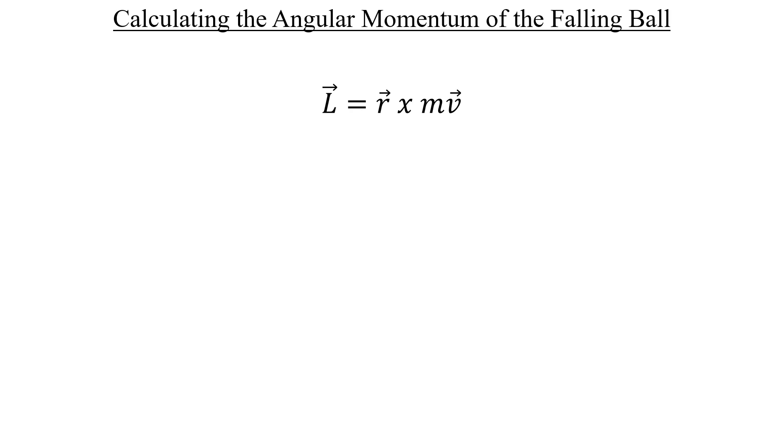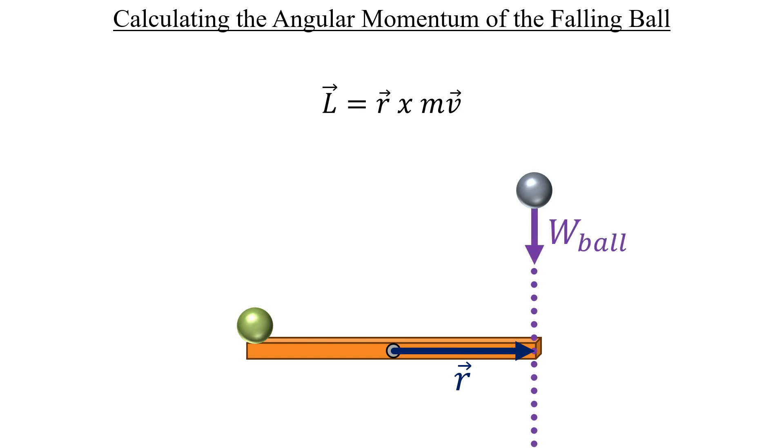Recall that the definition of momentum is mass times velocity, so we can rewrite this equation using that definition. To complete this cross product, I think it would help if we bring our picture back into focus and center a three-dimensional coordinate system on the bar's pivot point. Our first vector, the position vector, is directed from the point of rotation at the origin to the line of action of the force that acts on the bar.